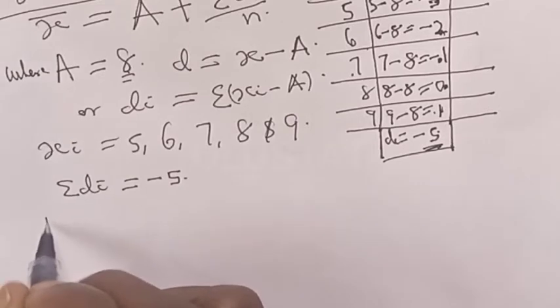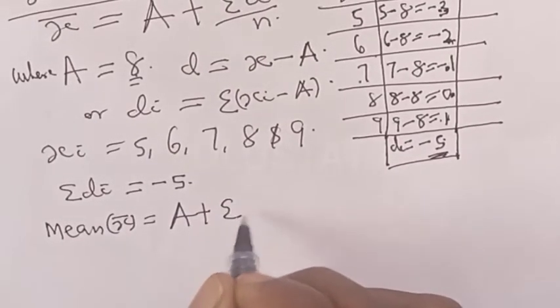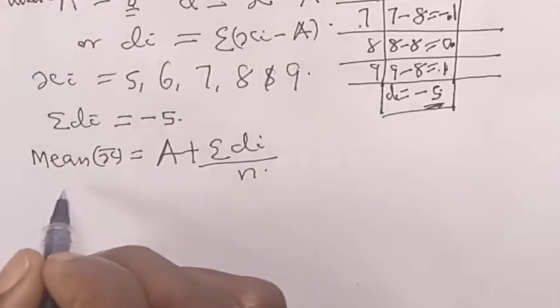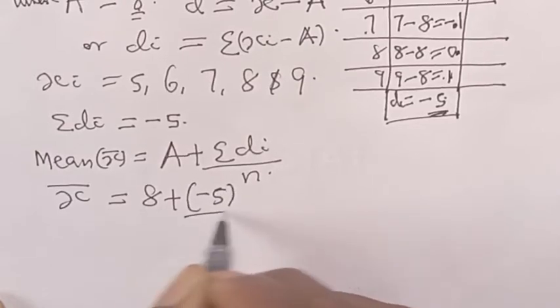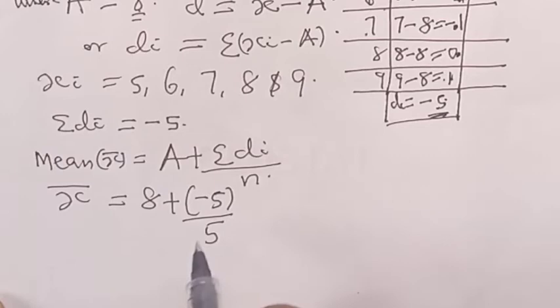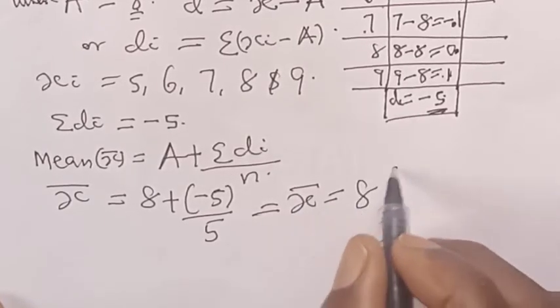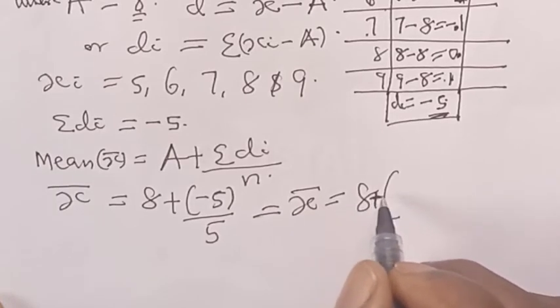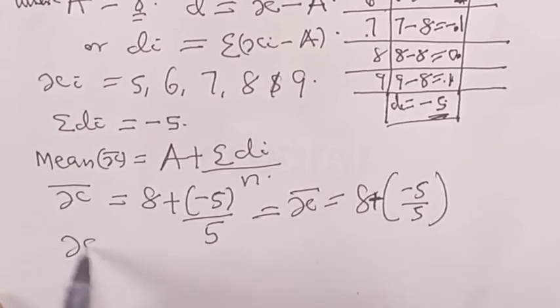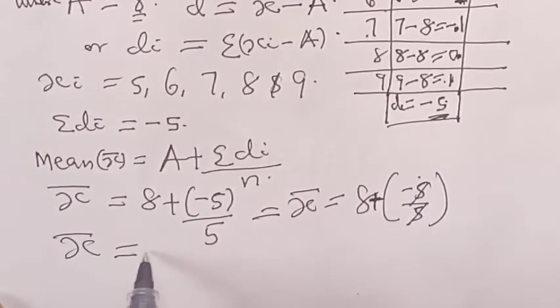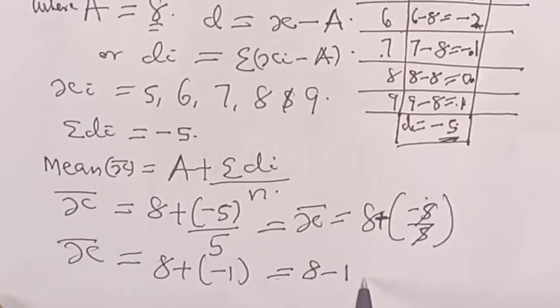Then our mean now. Mean x̄ is equal to A plus sum of di over n. That is x̄ is equal to our A which is 8, plus our di which is minus 5, over n which is 5. Which is equal to x̄, which equals 8 plus minus 5 over 5. This 5 will cancel to 1, giving us 8 plus minus 1, which is equal to 8 minus 1, which is 7.